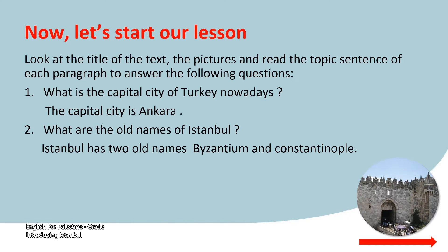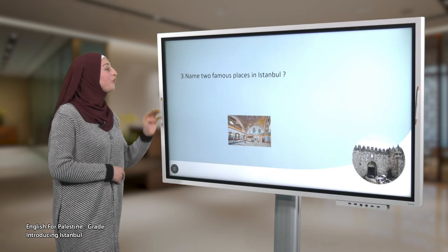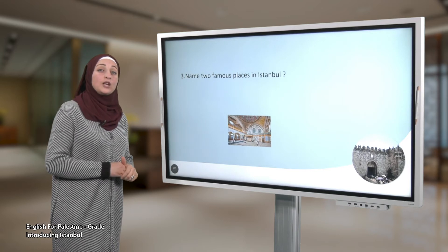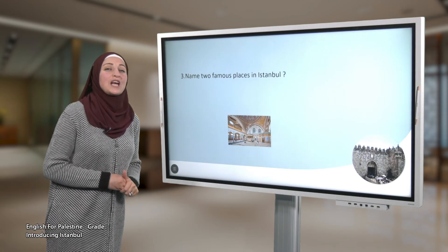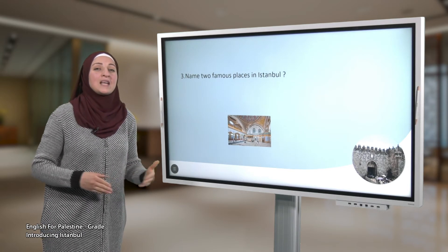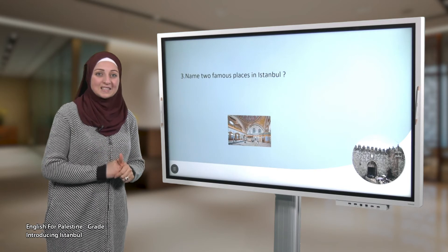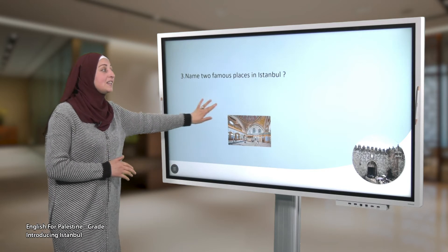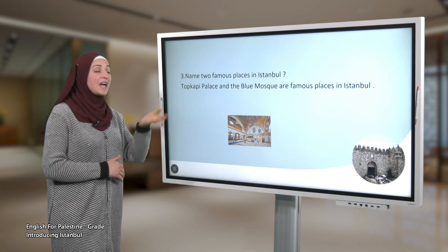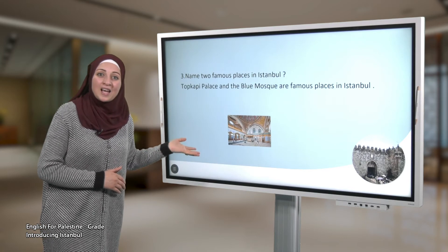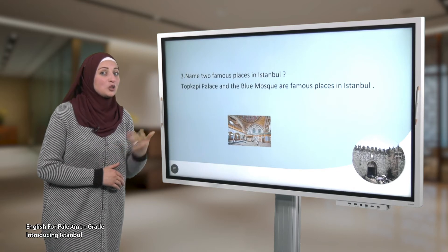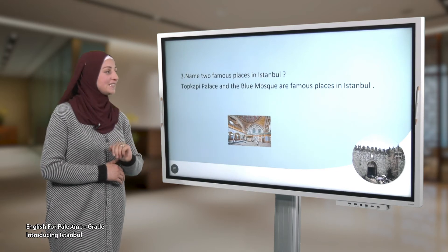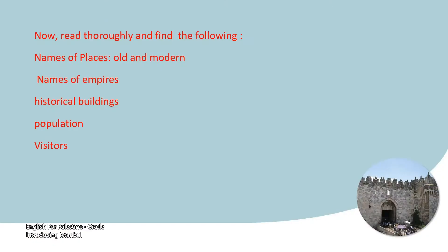Question number three: name two famous places in Istanbul. If you go to Istanbul, you can visit many different gorgeous places, like the Blue Mosque, Hagia Sophia, Topkapi Palace, and many other places.